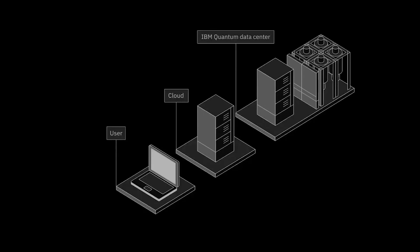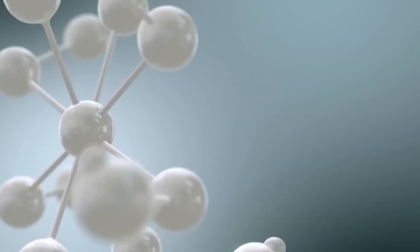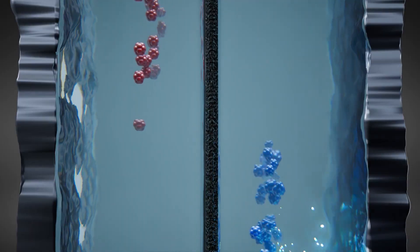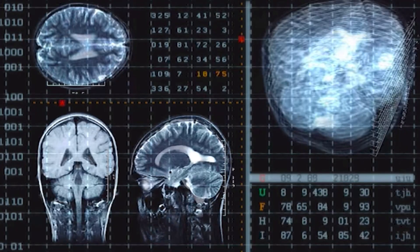Firstly, think about molecules, those tiny things that make up everything. Regular computers have a hard time figuring them out. But quantum computers can help us understand how molecules work, like how batteries store energy or how proteins do their job. This could lead to better ways to save energy and improve medicine.